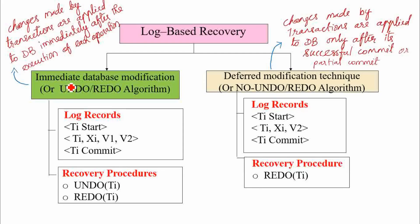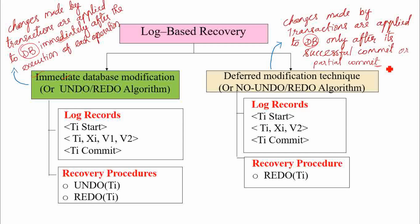In the case of immediate database modification technique, the changes made by transactions are applied to the database immediately after the execution of each operation. Since the updates are made immediately after each operation, it is known as immediate database modification technique. Whereas in deferred modification technique, changes are applied to the database only after its successful commit or partial commit of the transaction.